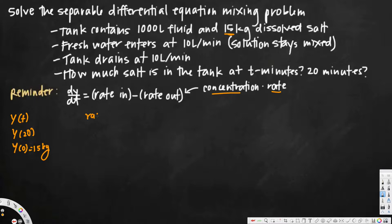Let's calculate rate in and rate out. Rate in: the flow entering is 10 liters per minute, but we multiply by the concentration. Since they mentioned this is fresh water — whenever they say fresh water or pure water, the concentration is zero — so rate in is zero times 10 liters per minute, which equals zero.